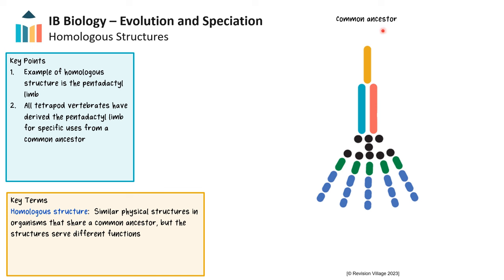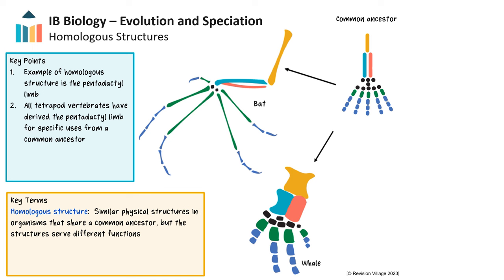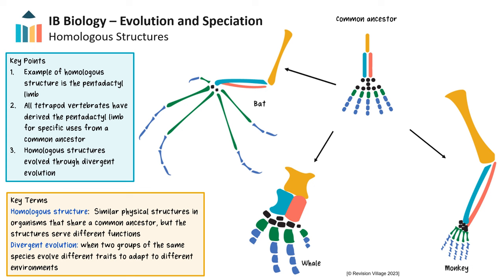In our diagram, we can see a generalized limb plan of the common ancestor that includes the humerus, radius, ulna, and so forth in the arm, and the same plan including a femur, tibia, and fibula in the leg. This basic plan has been adapted for different functions — in the bat, whose wing is evolved for flight; the whale, where it functions as a flipper for swimming; and the monkey, where it is adapted for grasping. All have a similar underlying bone layout, but bones have elongated or shortened depending on how the limb evolved for different uses. This evidence supports that these species shared a common ancestor and then adapted to different environments through divergent evolution.